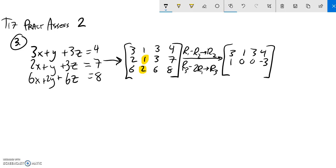Row three minus two times row one. So I have, let's see, six minus six is zero. Two minus two, that's zero. Six minus six is zero. Eight minus eight is also zero.